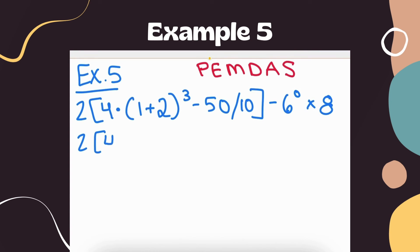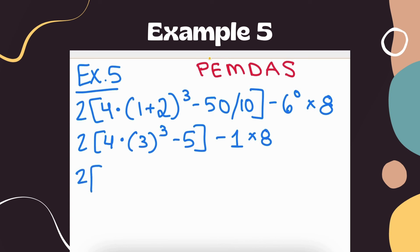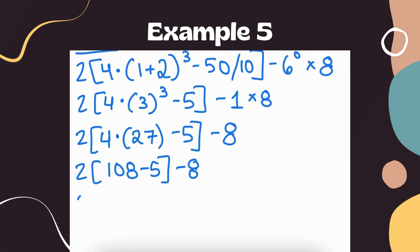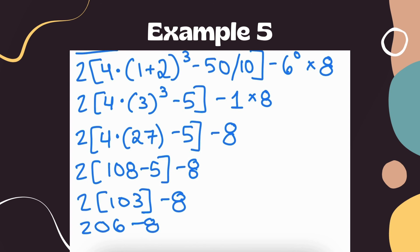I'd like to show you how you can solve this problem doing multiple steps at once. We can simplify the innermost parentheses to 3, do 50 divided by 10 is 5, and note 6 to the 0th power is 1, all in one line. Then 3 cubed is 27, and 1 times 8 is 8. Working through: 4 times 27 is 108 minus 5, giving 103 in the brackets, so 2 times 103 is 206 minus 8, which is 198.